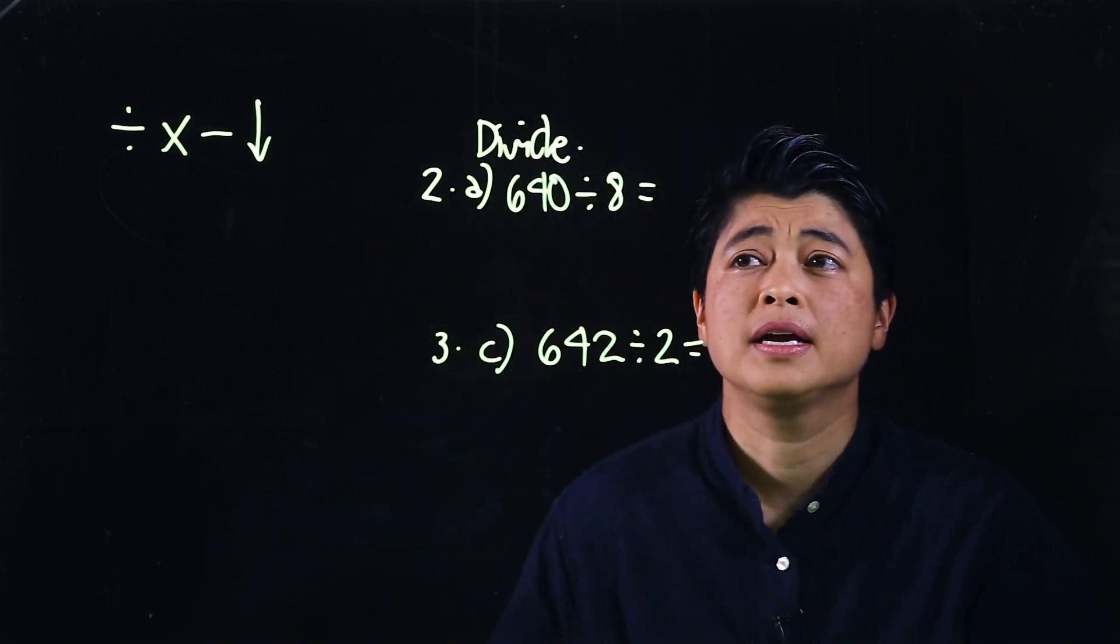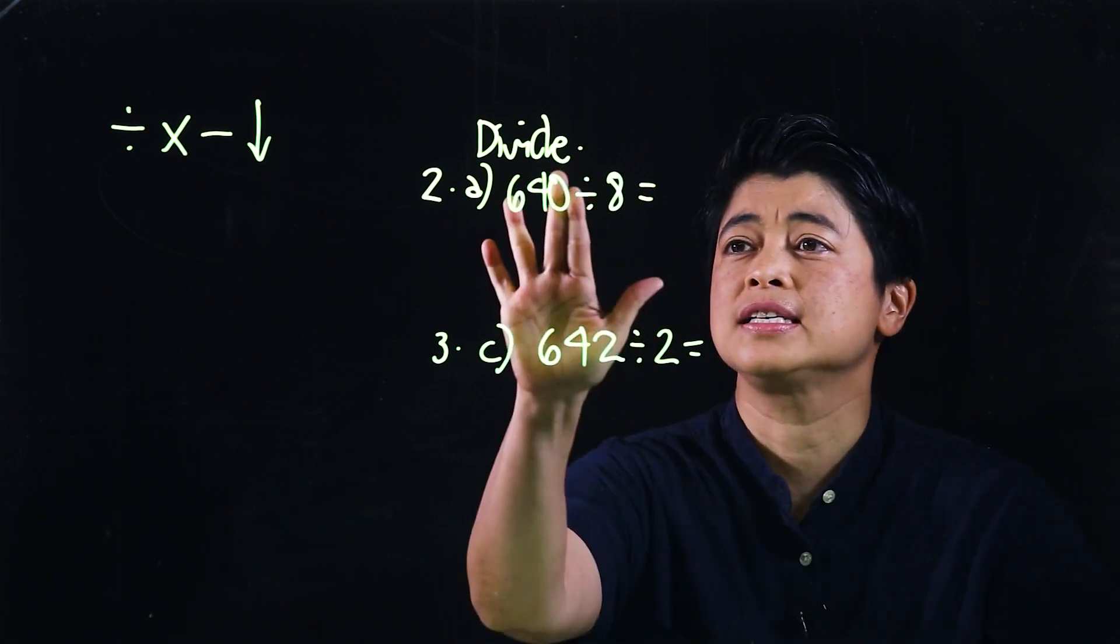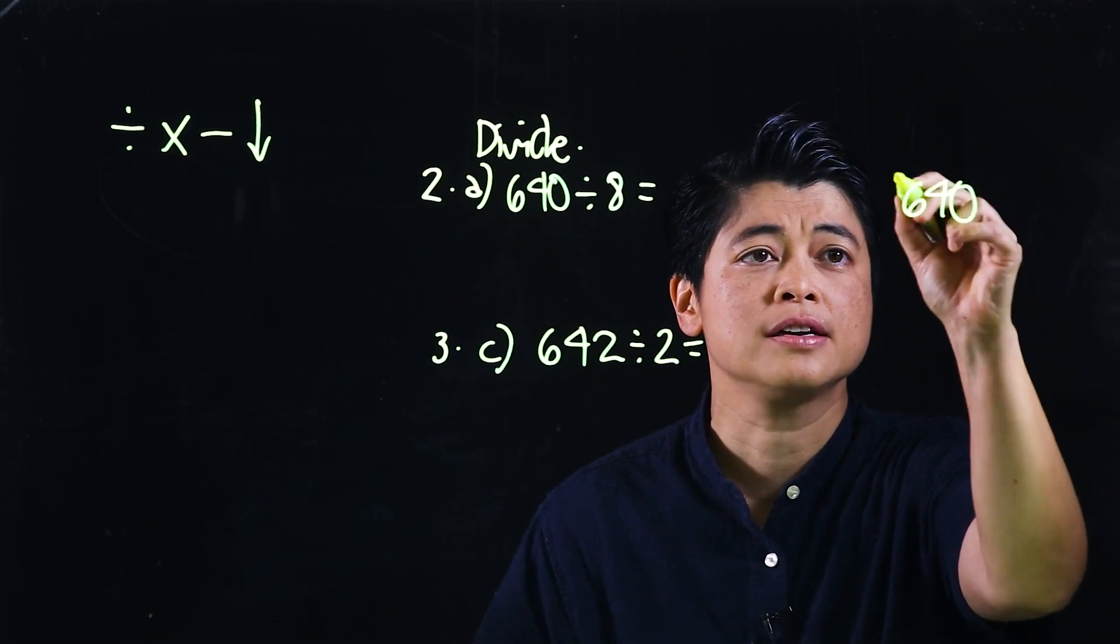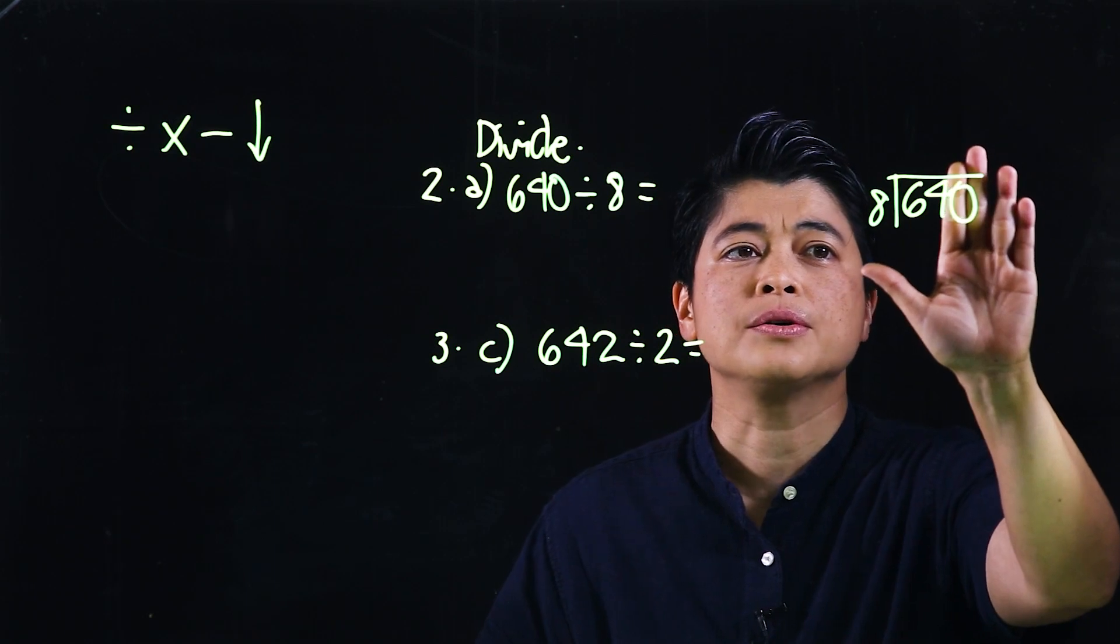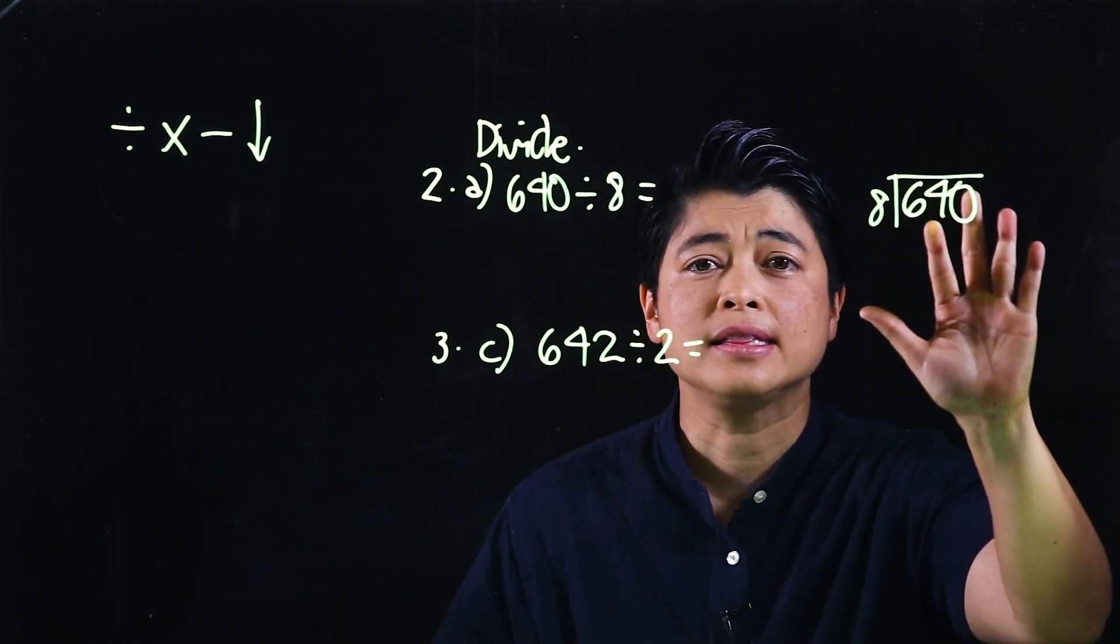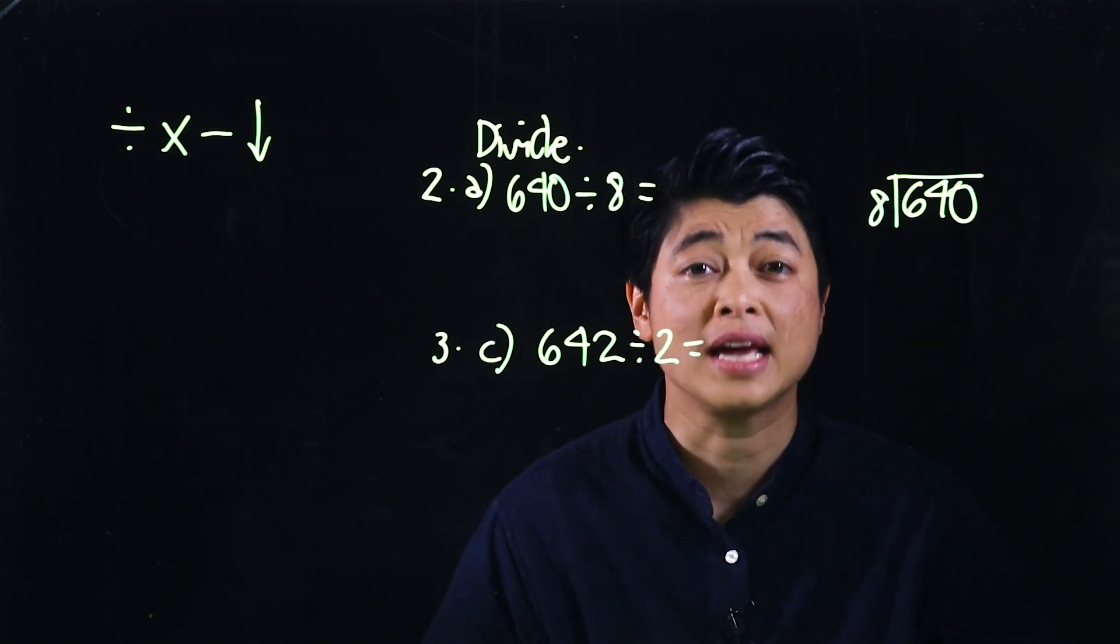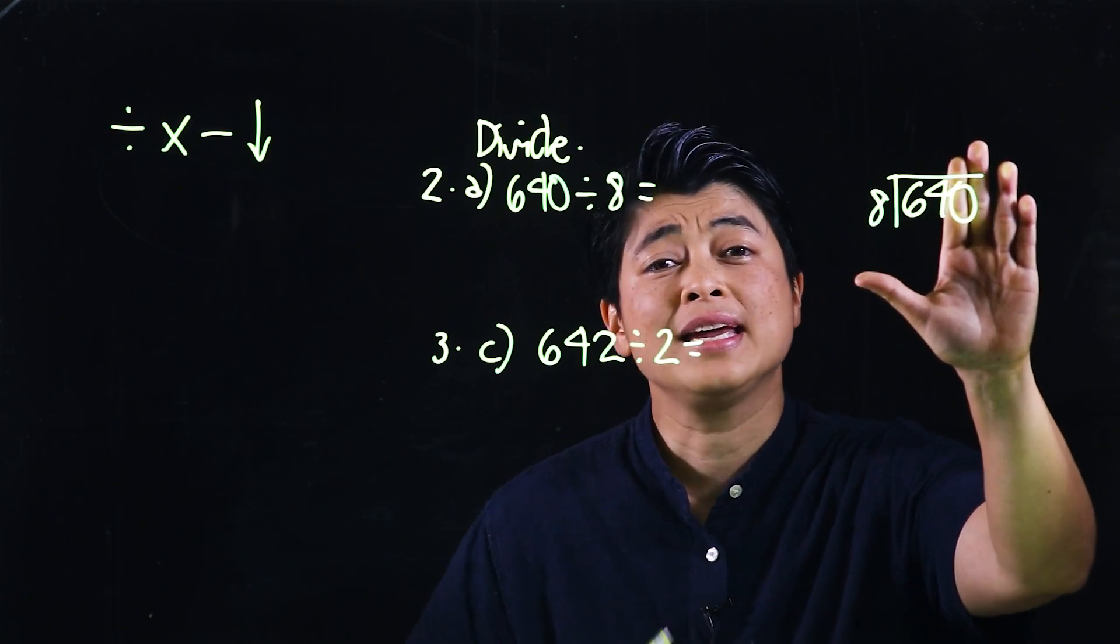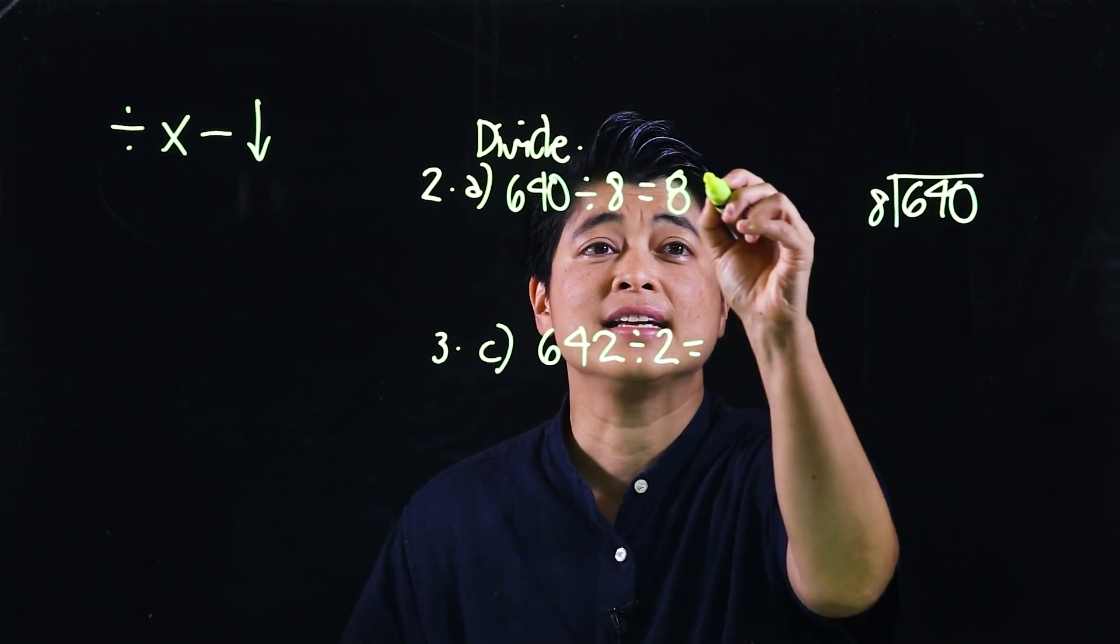For 640 divided by 8, if we cover the zero and look at 64, the kids should be able to see that 8 times 8 is 64. By using flashcards, it helps them visualize and see that. So if they can see that, then all they have to do is put the 8 and then add a zero in the end.